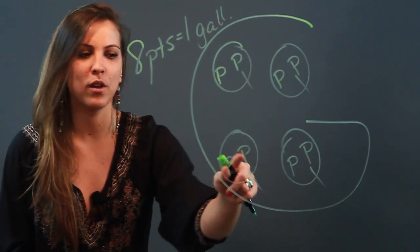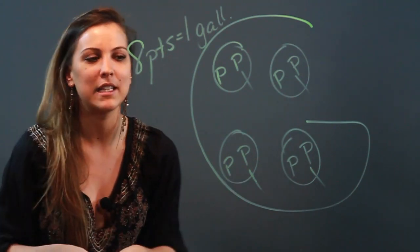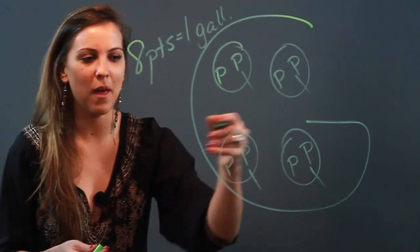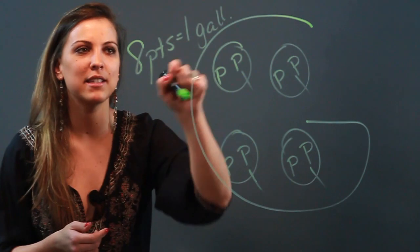And there's two pints in one Q. So there's two P's and one Q means that there's two pints in one quart. So if you can remember that big G, you can remember that there are eight pints in every one gallon.